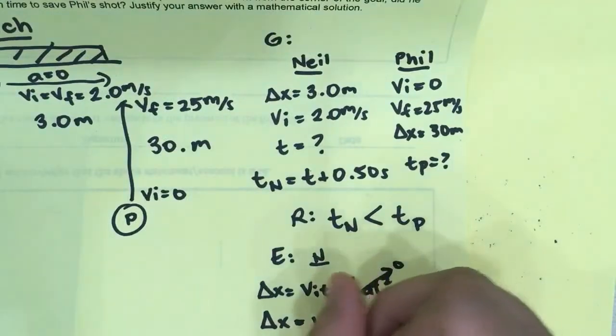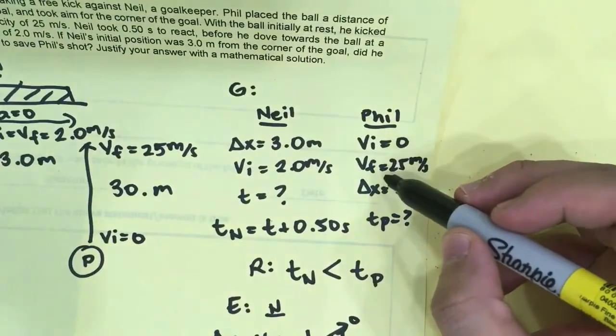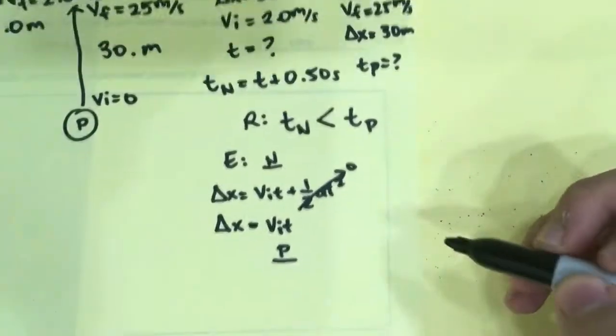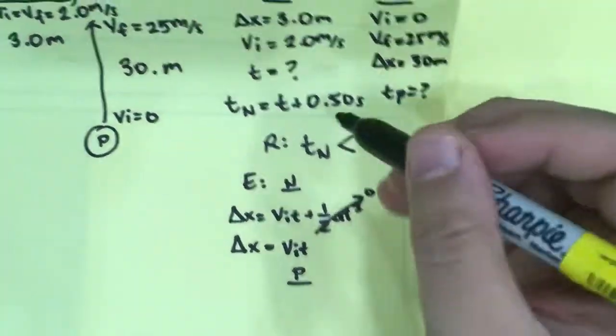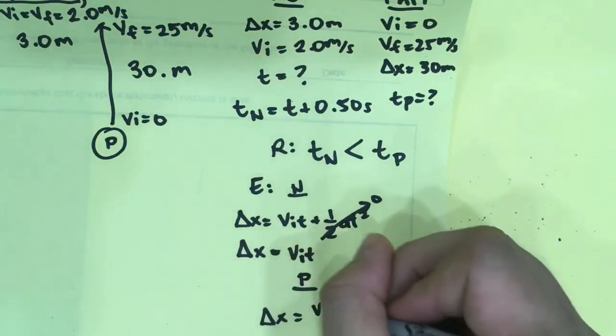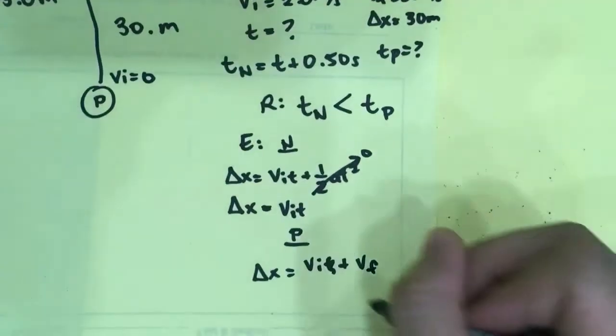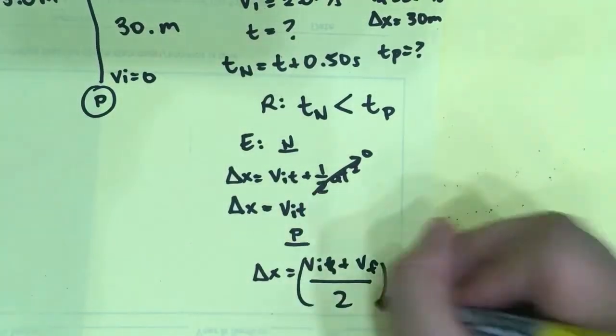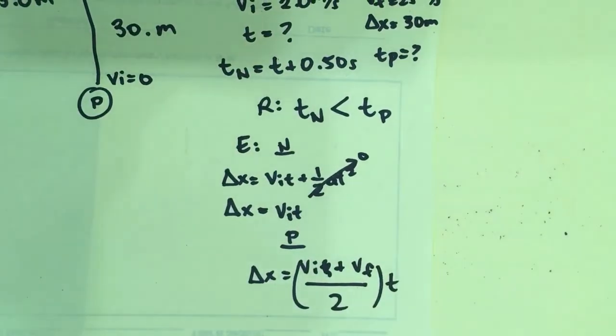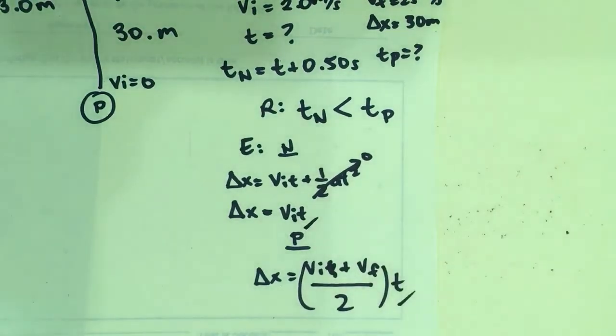For Phil, we can use, we have VI, we have VF, delta X, time of Phil. So let's take a look. We can use delta X, VI plus VF divided by 2 times the time. And we're going to compare the two times and make sure and check which one is faster. Now let's solve.